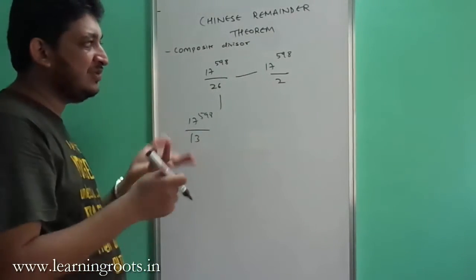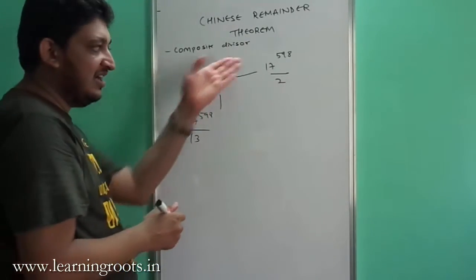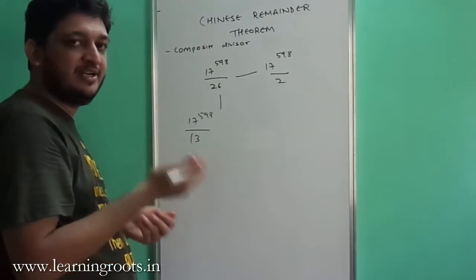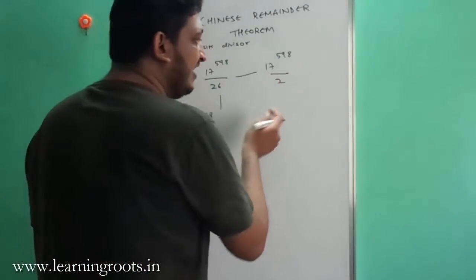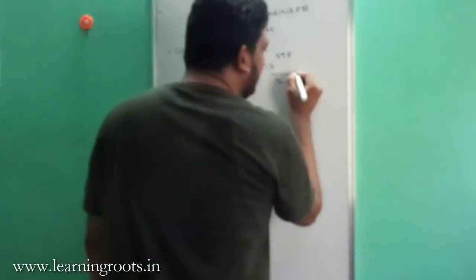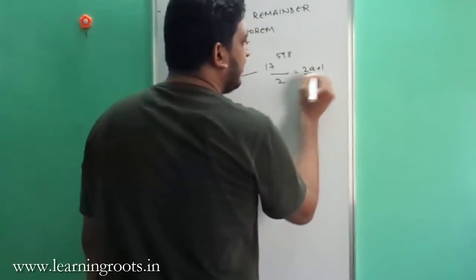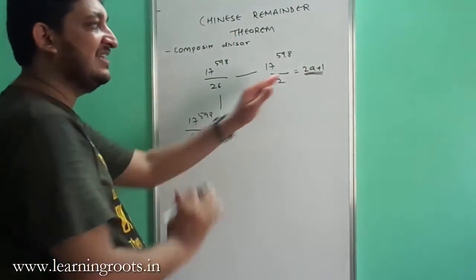Because the term is 1 raised to 598 which is effectively 1, when it is divided by 2 it will give a remainder of 1. So this entire expression when divided by 2 will be in the form of 2A plus 1. So you have to just keep it like this for the moment.